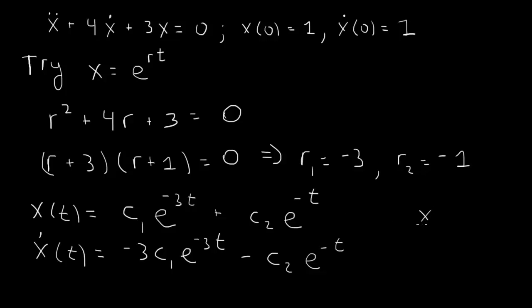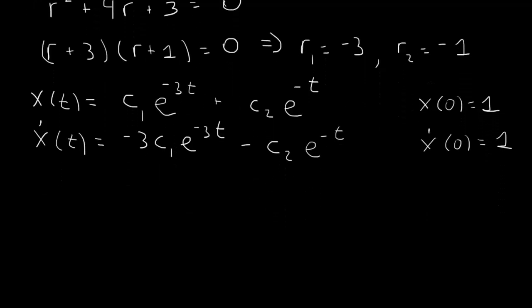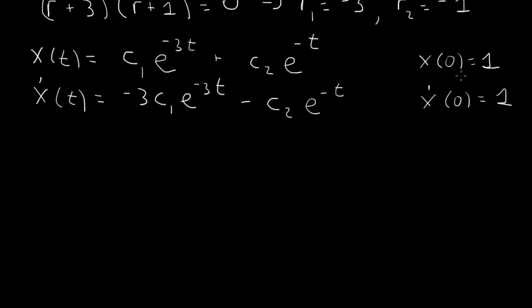We're going to apply initial condition x of 0 equals 1 to this equation, and x dot of 0 equals 1 to the equation for the first derivative. When we substitute in t equals 0, we get c1 times e to the 0, which is 1, plus c2 times e to the 0, which is 1, equals 1. In the first derivative, substitute in t equals 0, we get minus 3 c1 minus c2 equal to 1.